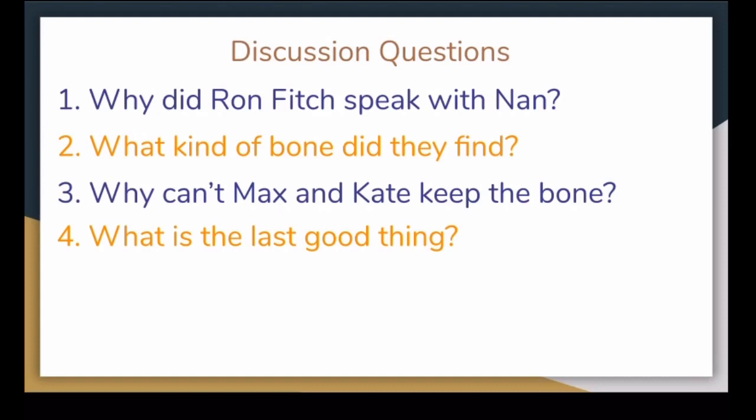Number two. What kind of bone did they find? Right. They found a T-Rex bone. Number three. Why can't Max and Kate keep the bone? You got it. Max and Kate cannot keep the bone because they found it in a state park. There is a law that says the bone belongs to the state and should be placed in a museum for all to enjoy. Number four. What was the last good thing? Right. Kate and Max get to name the bone.